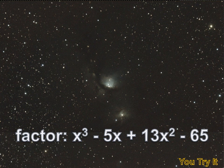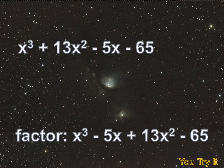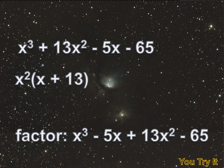Here are a couple of tricks to remember when factoring complicated polynomials. First, if there are four terms in the polynomial, chances are good we're going to be grouping. Second, it's best to rewrite polynomials in standard form with the highest powered monomial on the left and the lowest powered monomial on the right. So I'm going to rewrite this as x cubed plus 13x squared minus 5x minus 65. I'll group the first two terms, x cubed plus 13x squared, and pull out an x squared to rewrite that as x squared times x plus 13.